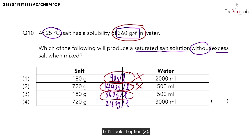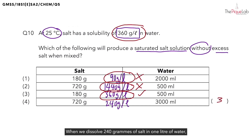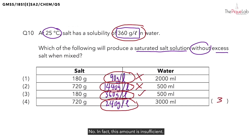Option three shows us the maximum amount of salt that can dissolve at 25 degrees Celsius — this is in fact our answer. But let's just look at option four. When we dissolve 240 grams of salt in one litre of water, we are not going to get a saturated salt solution — this amount is insufficient. So this confirms our answer as option three.